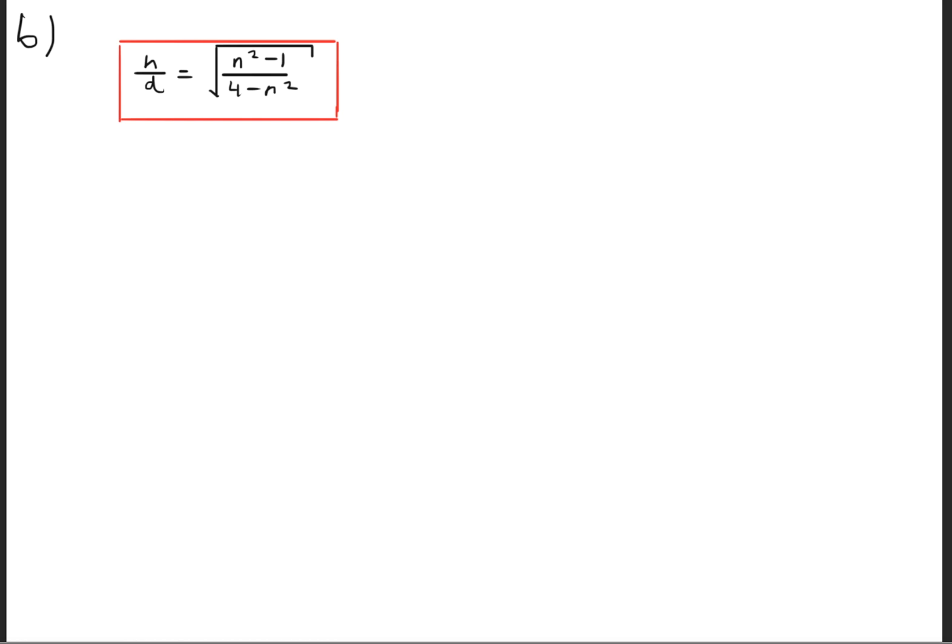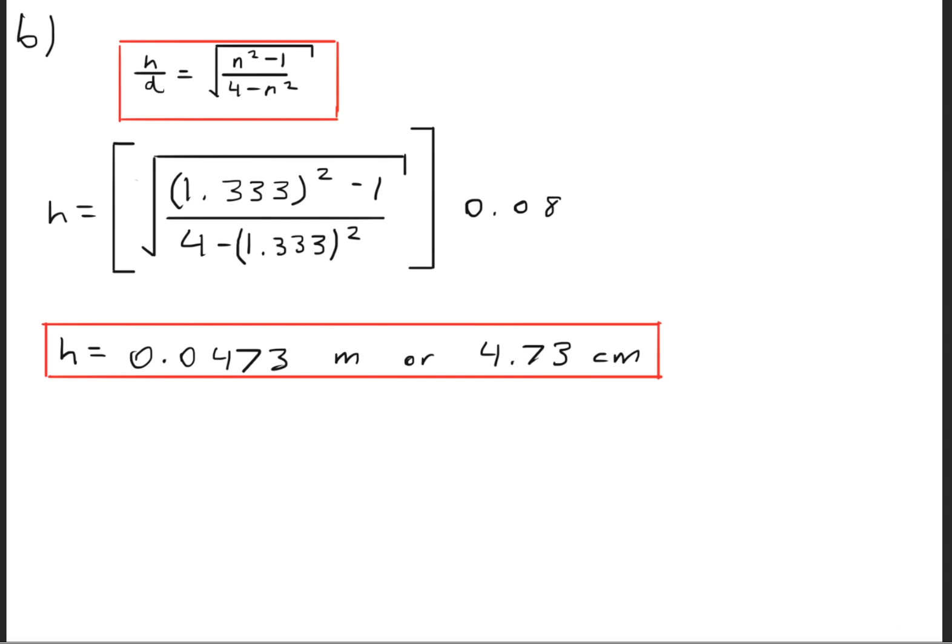Part B wants us to use the same equation that we just proved and go ahead and solve for the height. When we plug in the numbers here, where the index of refraction we're interested in is the one for water, which is 1.333, and we'll go ahead and plug in all the variables and we'll get a height of 0.0473 meters or 4.73 centimeters.